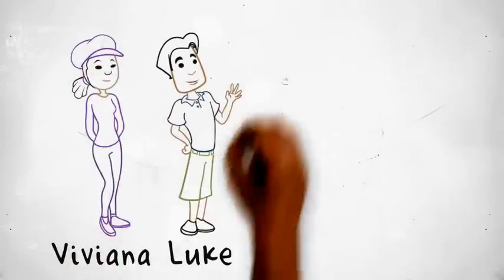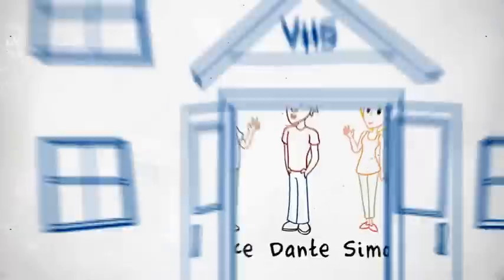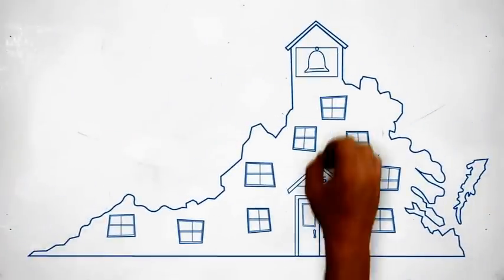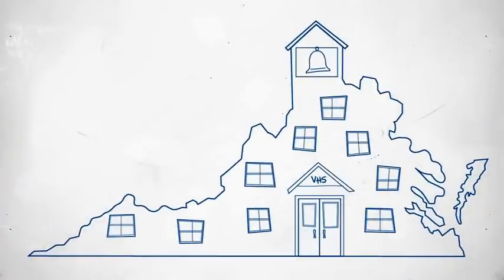Meet Viviana, Luke, Dante, and Simone. These students all enter Virginia's school system at the same time and grow up together all the way through high school.